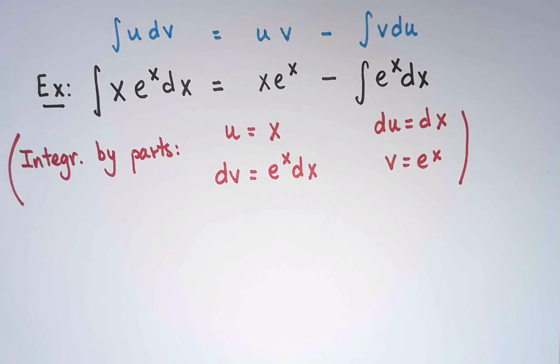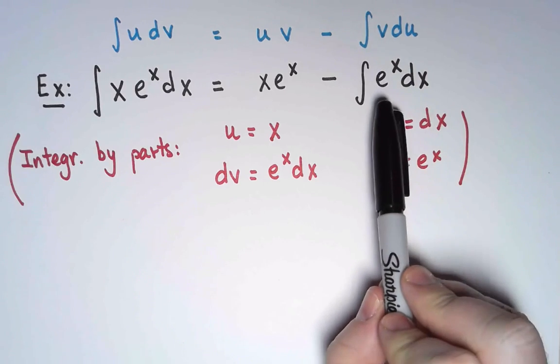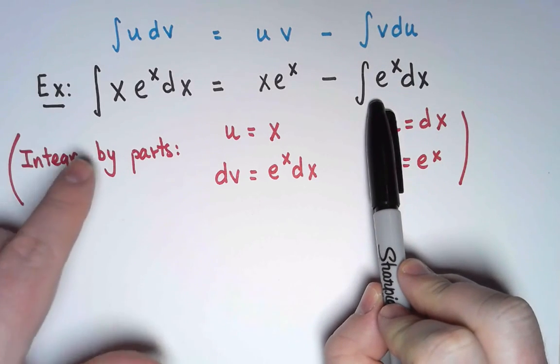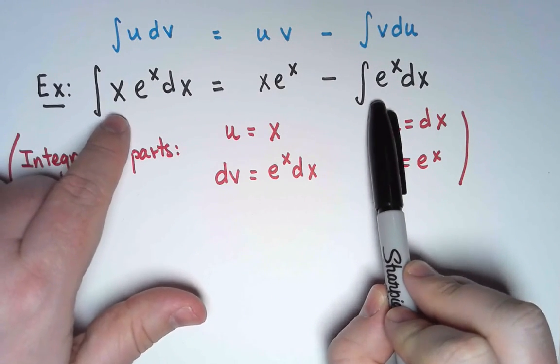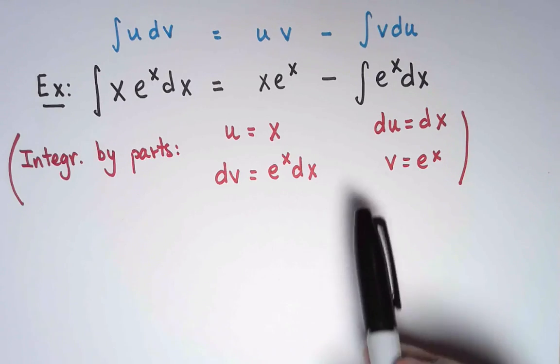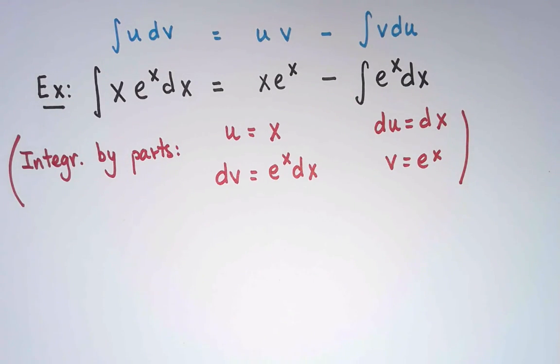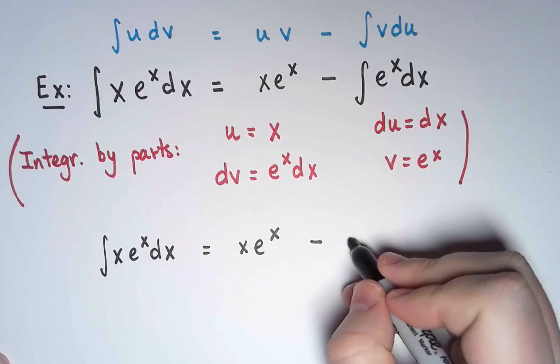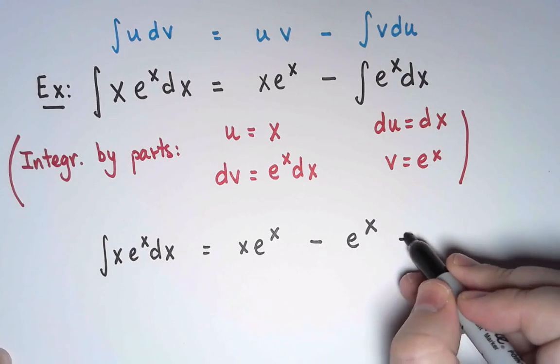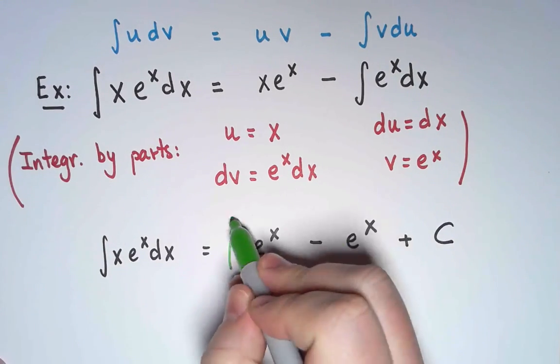And this is good. This is progress. As expected, the new integral is easier than the original integral. So this was a good idea. And in fact, I know what an antiderivative of e to the x is. It is simply e to the x. And don't forget the integration constant. And that's my final answer.